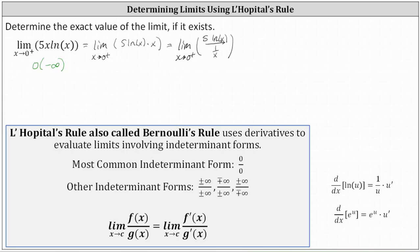Now check the form of the limit again. As x approaches zero from the right, natural log x approaches negative infinity, giving us negative infinity in the numerator, and 1 divided by x is approaching positive infinity as x approaches zero from the right. So now we have the indeterminate form of negative infinity divided by positive infinity, which allows us to apply L'Hôpital's rule.